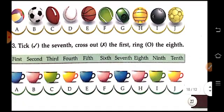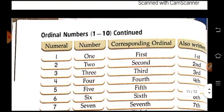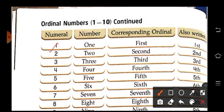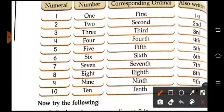So again children, do all these sums. Now ordinal numbers 1 to 10 — numeral, number name, and corresponding ordinal. So numeral is 1, number is O-N-E. Corresponding ordinal is 1st. Then numeral is 2, number is T-W-O. Corresponding ordinal is 2nd. Now numeral is 3, number name is T-H-R-E-E. Corresponding ordinal is 3rd. So learn all these ordinal numbers and number names.